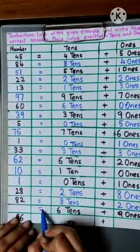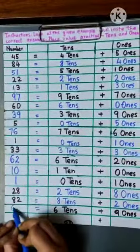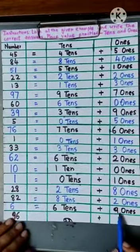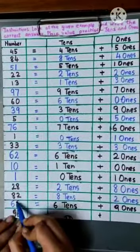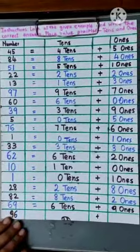Then we have 6 tens. That means we have to write 6, then 9 ones, so we will write 9. Number is 69.